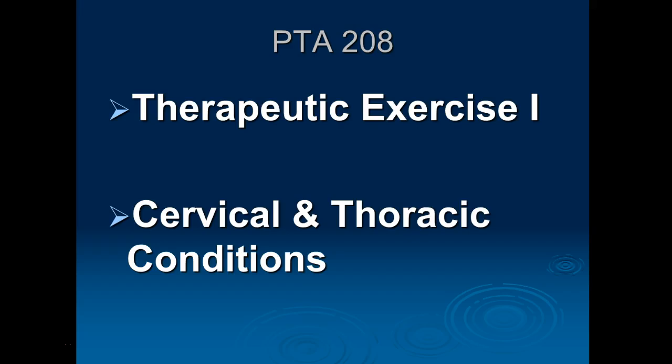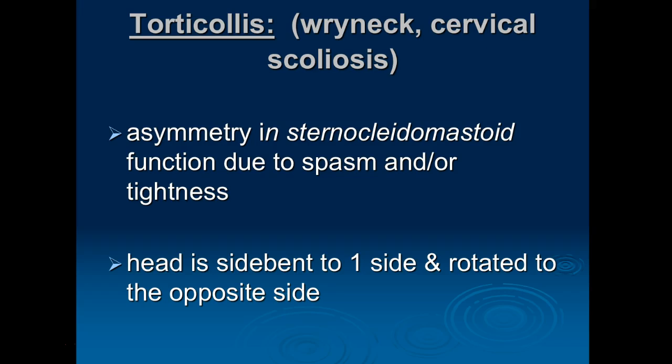The first condition we're going to cover is torticollis. This is sometimes referred to as wry neck or cervical scoliosis, but more typically you hear just the term torticollis. It can occur in all age ranges; it is more common in infants. Usually if an infant has it, they are born with it. Basically what you have is asymmetry in the function of the sternocleidomastoid muscle — that muscle is typically in spasm with severe tightness. Because it's unilateral, affecting only one side, the head tends to be side bent to one side and rotated to the opposite side, matching the function of that muscle.